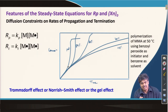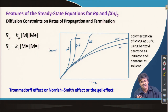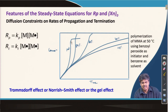If the polymer's T_g is higher than the reaction temperature, the polymer becomes very hard and glassy. In such cases, no further reaction may be possible — for example, even starting with pure monomer, the reaction cannot reach 100% conversion.